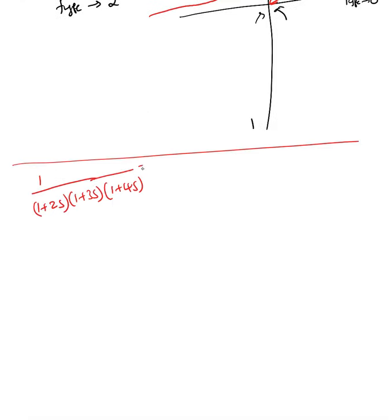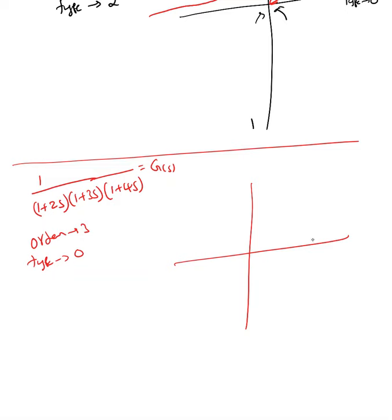The next example is 1 over (1+2s)(1+3s)(1+4s). The order of the system is three; the type is zero because there are no poles at the origin. The graph starts at the type-zero position and ends at the third-order position, so it's going to look something like this. When you have no poles at the origin, the starting point is going to be visible.